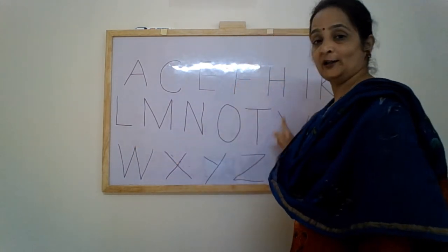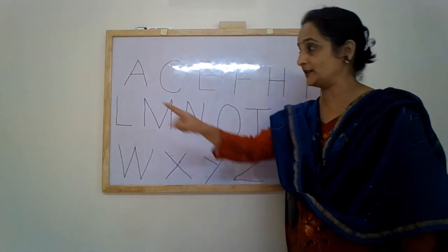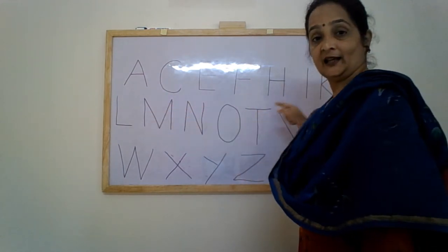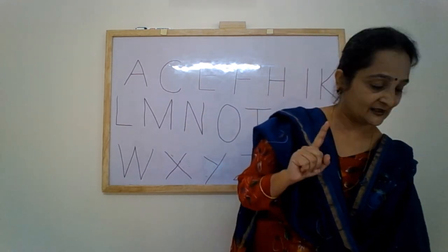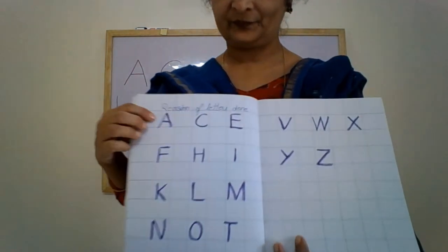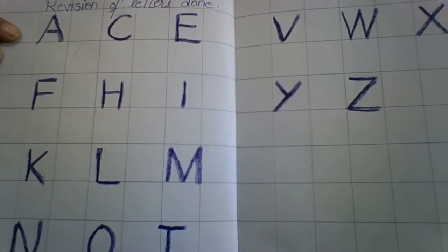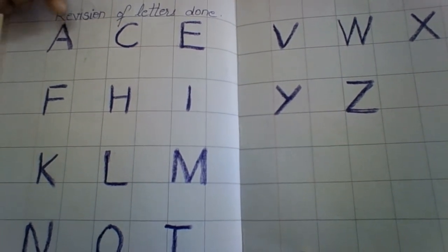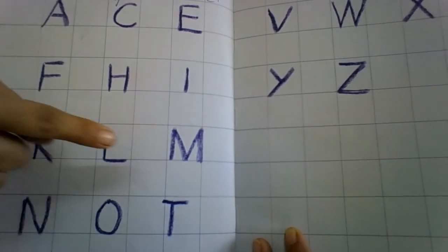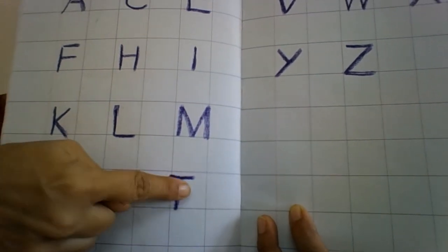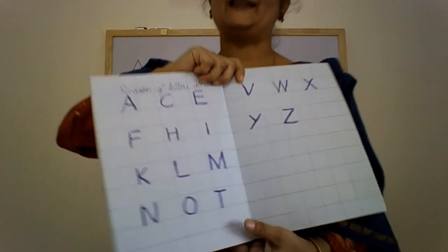So children, these are all the letters that we have learnt till now. Letters are always written horizontally — sleeping lines. Alright, so practice them in your notebook. Write in alternate squares and say aloud when you write them: A, C, E, F, H, I, K, L, M, N, O, T, V, W, X, Y, Z.